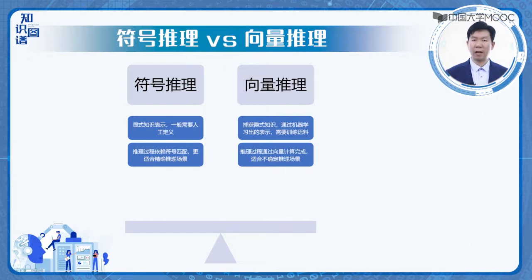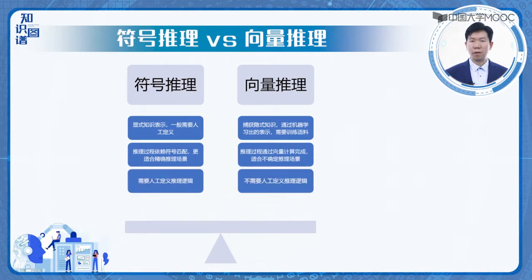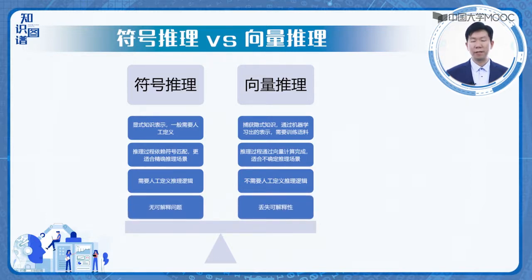符号表示的推理过程主要依靠符号匹配，更适合于需要精确推理的场景；而向量推理则是通过向量或矩阵计算来完成的，由于最终得到的是一个三元组事实的真实性得分，因此推理的结果也具有不确定性。符号推理一般需要人工定义推理逻辑，而向量推理本身利用向量计算完成近似推理，不需要人工定义显式的规则逻辑。符号推理过程本身是严格且可理解的，因此没有可解释性问题；向量推理虽然简单高效，但丢失了推理的过程，因而也就丢失了推理的可解释性。